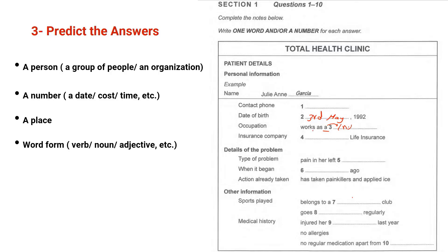Occupation works as a. A must be followed by a noun, so you know that you are going to write a noun and most probably the name of the job. Insurance company, life insurance, so here you write the name of the life insurance company. Details of the problem: type of problem, pain in her left. Left is an adjective, so it will be followed by a noun, and it could be part of her body because this is a problem, like in her left ear or leg. When it began, we have ago, so you write a period of time like a week ago or two days ago.